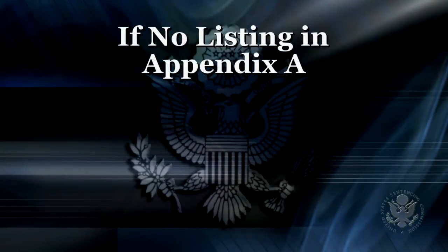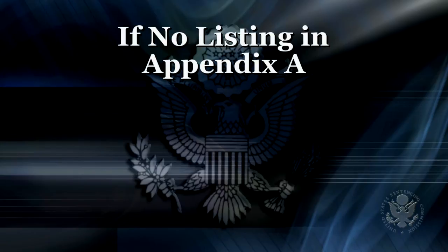In some circumstances, a defendant may be convicted of an offense that is not listed in the statutory index found in Appendix A. This does not happen often, but in a case where the statute of conviction is not listed and therefore does not have a corresponding guideline, the court is directed in 1B1.2 to look to two particular guidelines for guidance. For felony offenses of conviction, the court will look to 2X5.1. For misdemeanor convictions, the court will look to 2X5.2 for instruction. For further instruction on specific guideline application, please look at our additional videos describing Single Count Application, Chapter 3 Adjustments, Relevant Conduct, and Criminal History.